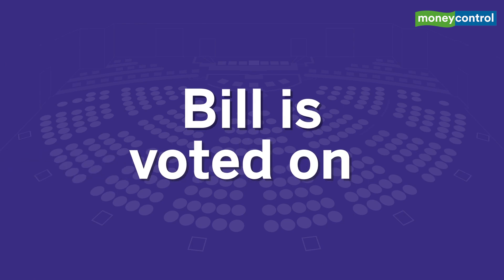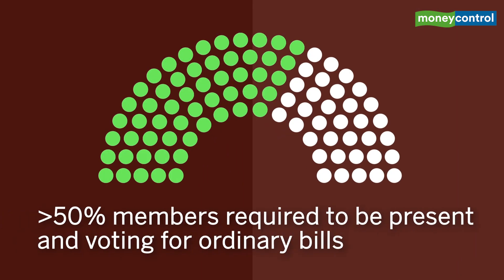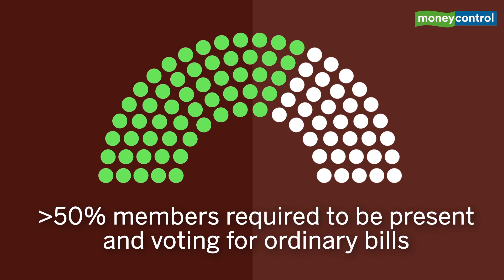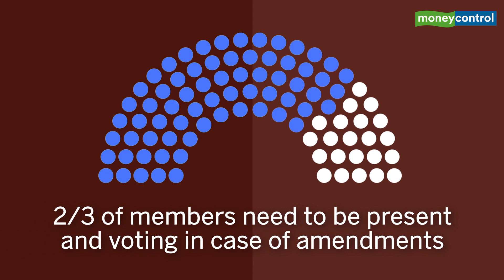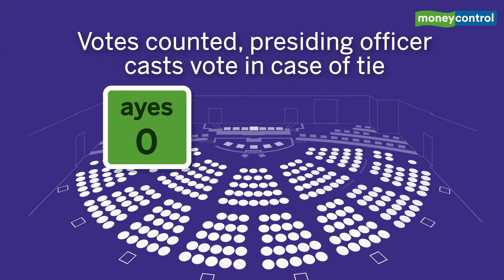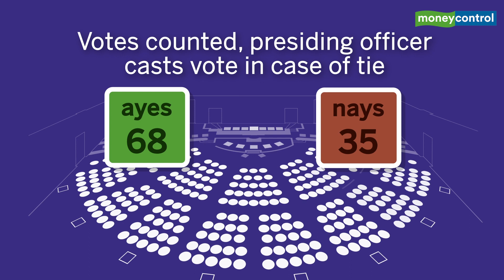After that, the bill is set up for voting. For ordinary bills, more than 50% of members are required to be present and voting in both the houses. However, when amending a bill, not less than two-thirds of the members are required to be present and voting. The votes are then counted, and in case of a tie, the presiding officer of the house casts his or her vote.